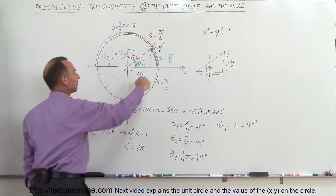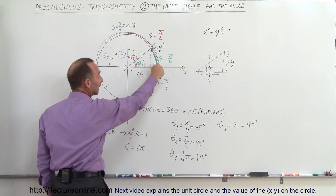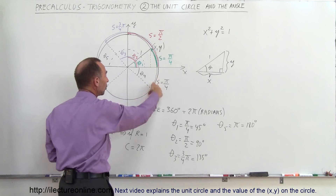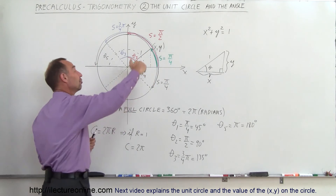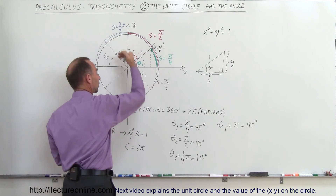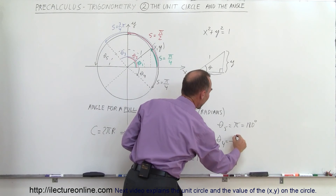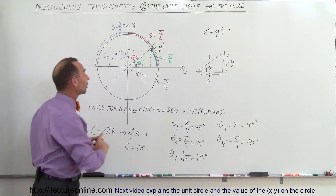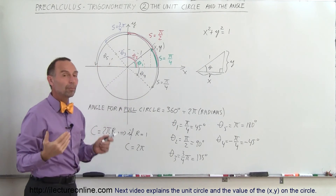What if I travel in the opposite direction — clockwise instead of counterclockwise? If I travel clockwise and go one quarter around the circle, the distance is the same: pi over 4. But theta sub 4 is a negative angle, because traveling clockwise is the opposite of the normal counterclockwise direction. So theta sub 4 is equal to negative pi over 4, which is equal to negative 45 degrees. By convention, when we travel clockwise the angle is negative, and counterclockwise the angle is positive.